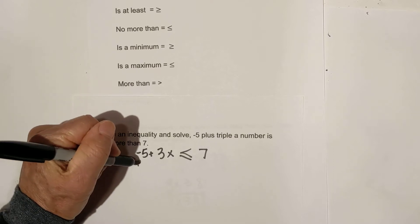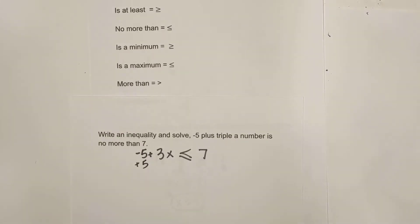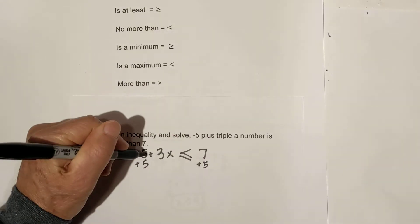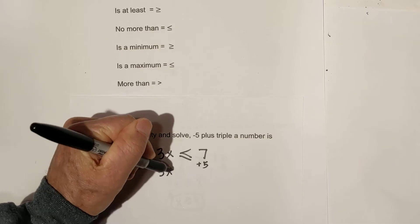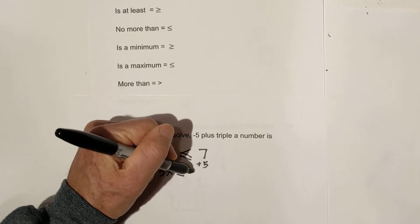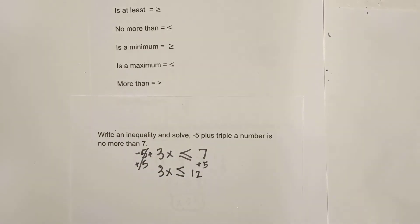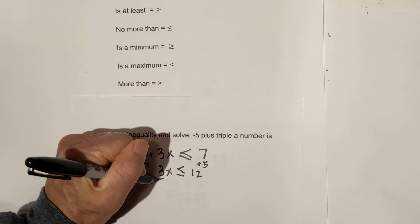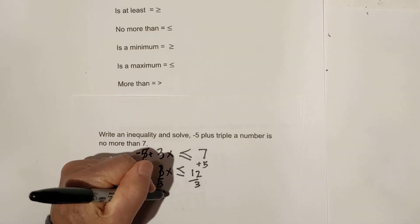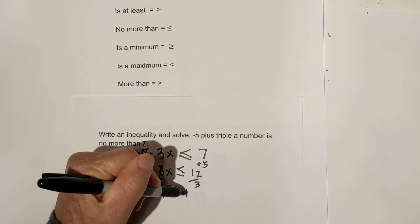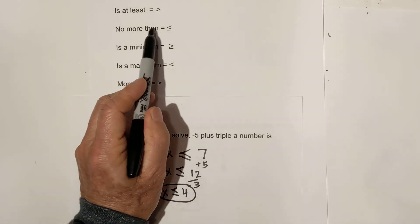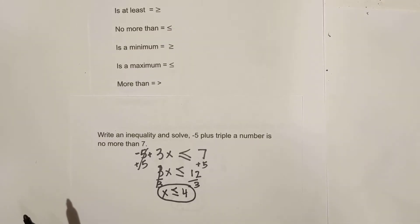Now let's solve. We are going to add five to both sides. These cancel, so we bring down: 3x is less than or equal to seven plus five, which is 12. Now we're going to get x by itself by dividing each side by three. These cancel. Bring down: x is less than or equal to four. Remember, 'no more than' is less than or equal to.